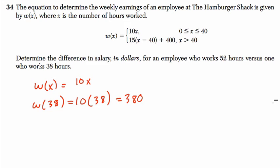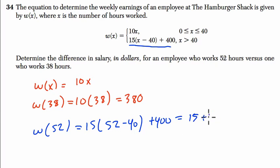Okay, for an employee who works 52 hours, we use the second equation, because we use this equation when X is greater than 40. So 15 times 52 minus 40 plus 400 equals 15 times 12, right? 15 times 12 plus 400, and that's 580.